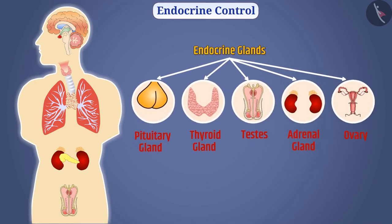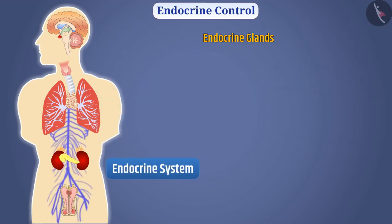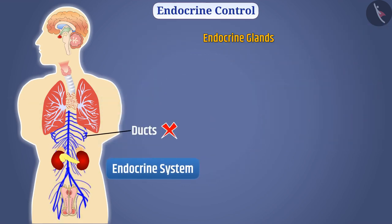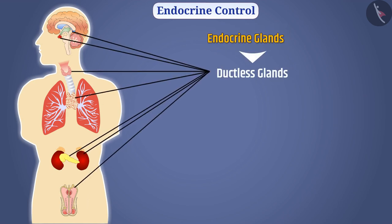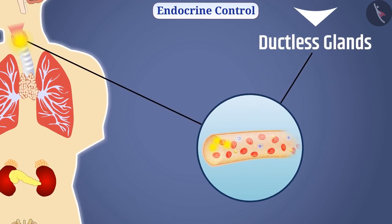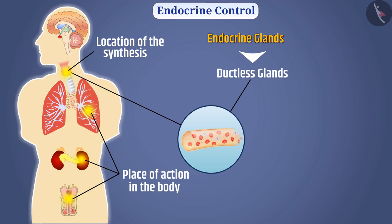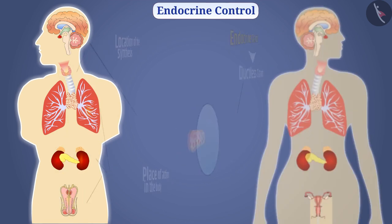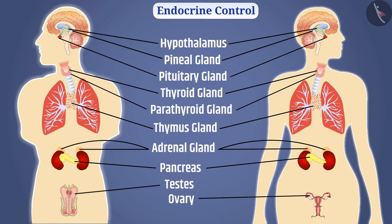All the endocrine glands of the body are part of the endocrine system. The endocrine glands do not have ducts, so they are called ductless glands. The hormones produced by them are secreted directly into the blood, through which the hormones reach all the cells of the body. Therefore, the location of hormone synthesis and the place of action in the body are different. The main endocrine glands in the human body are as shown — let's understand them.